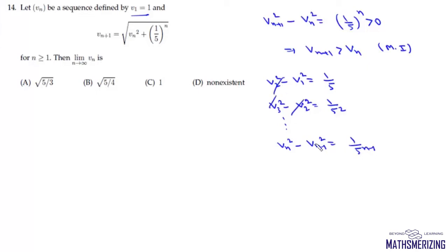Adding everything, we can write vₙ² minus v₁² which is 1, and it will equal 1 by 5 plus 1 by 5 squared up to 1 upon 5 to the power n minus 1.